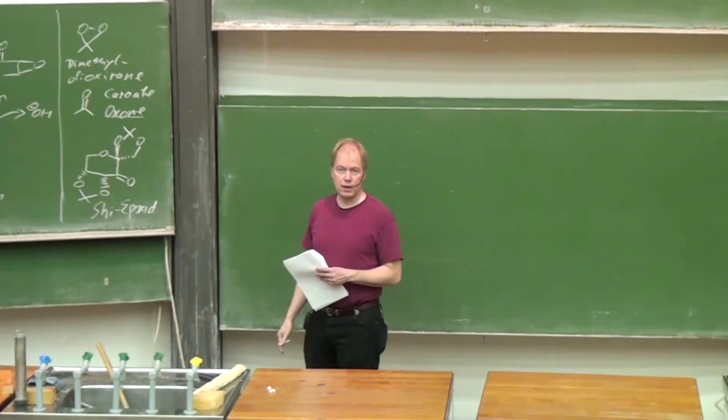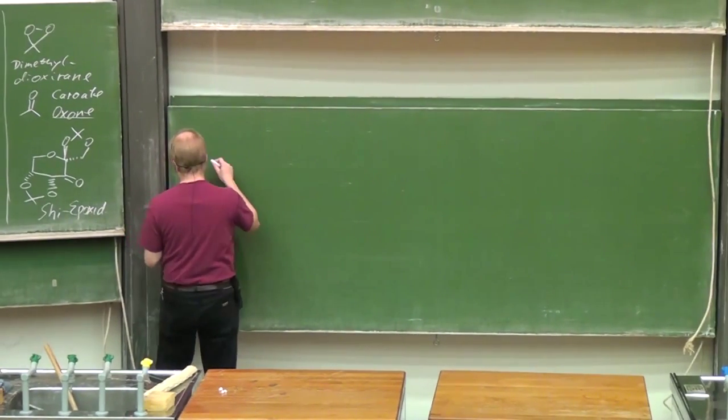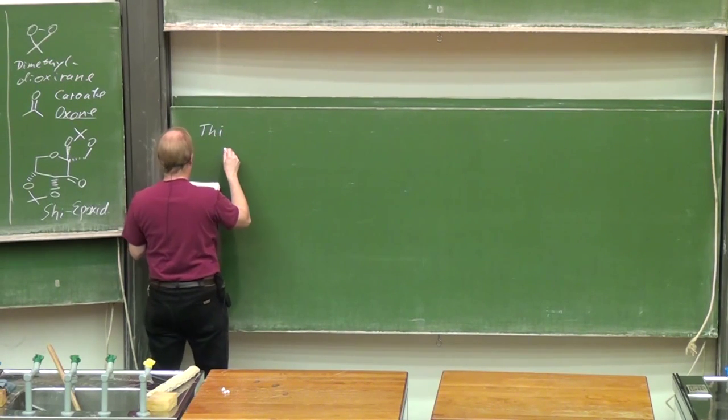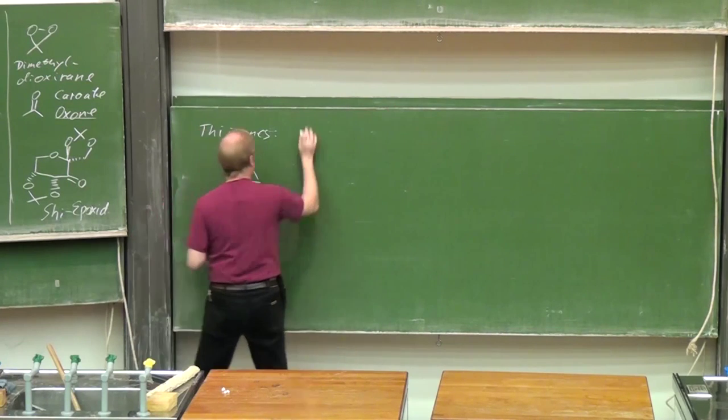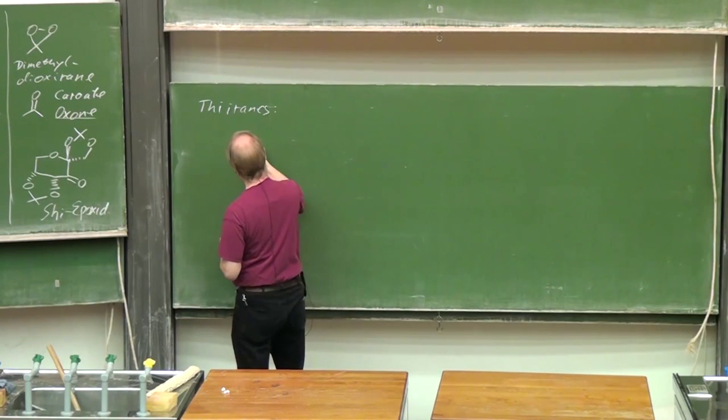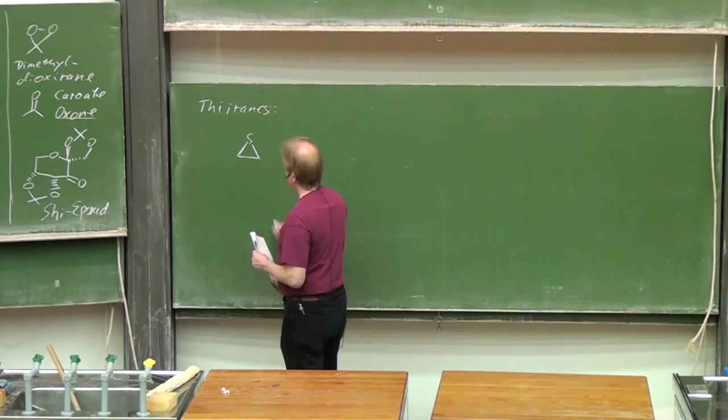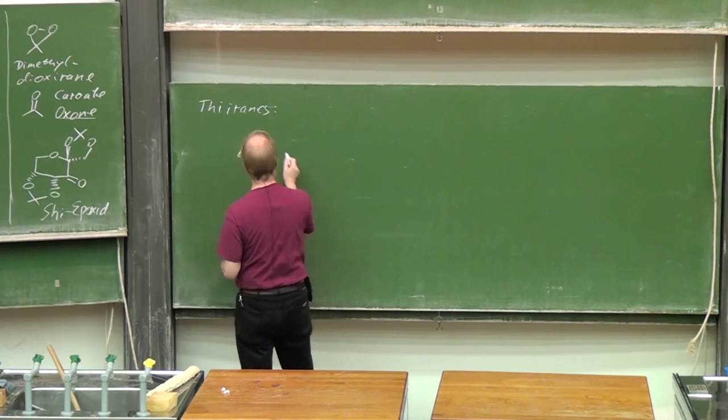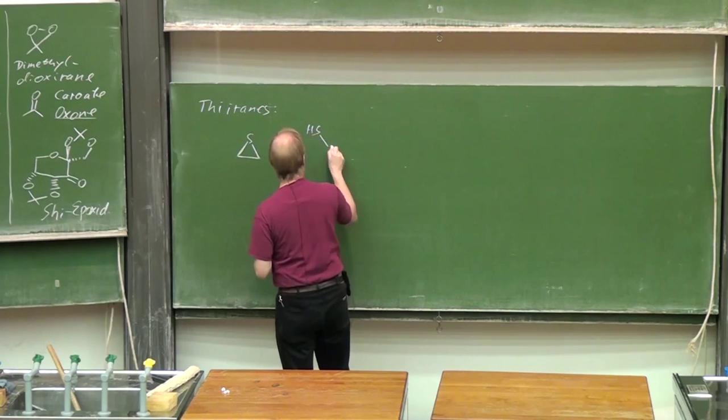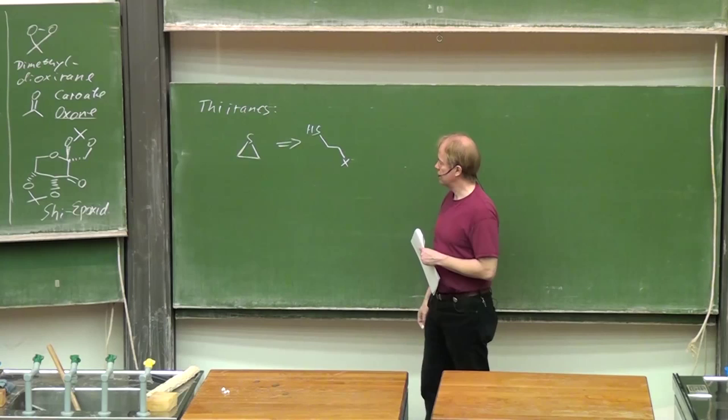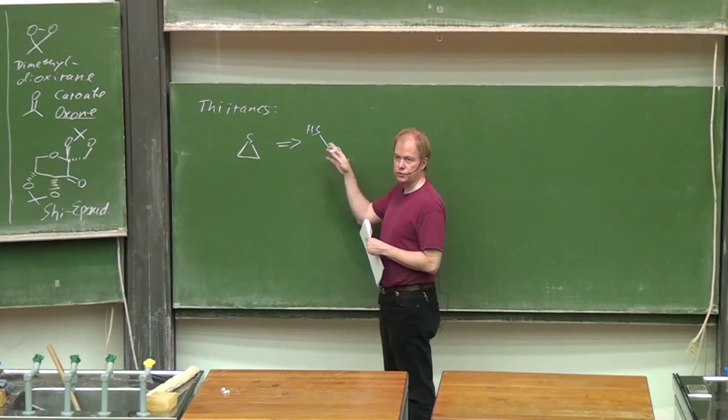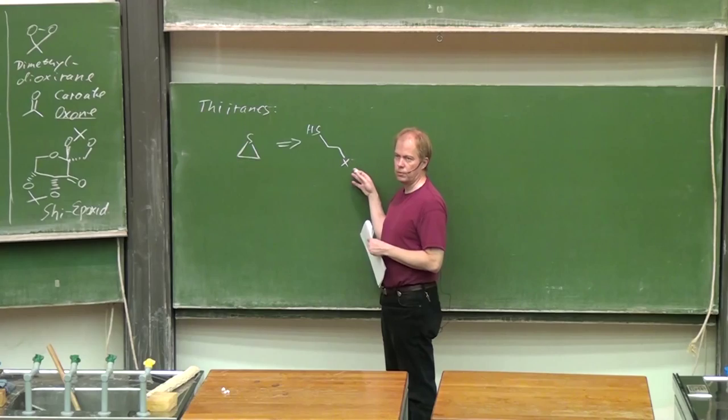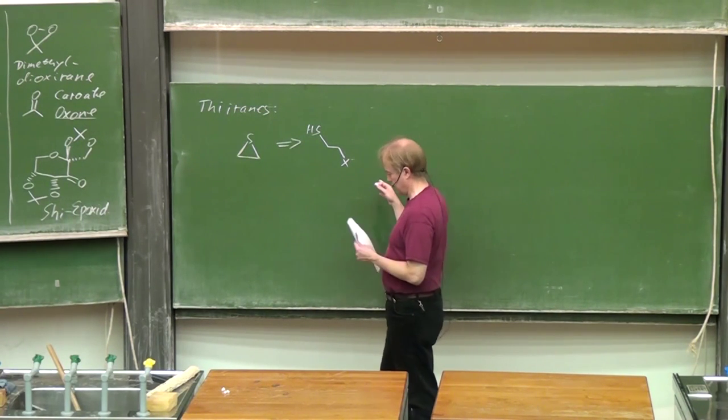The corresponding three-membered sulfur heterocycles are also known, the thiiranes with this parent structure. One can think about synthesizing that from this setup: a thiol and in beta position a leaving group, just treating with a base. Yes, it will work under high dilution. You of course can get oligomeric or polymeric product in the competing reaction.